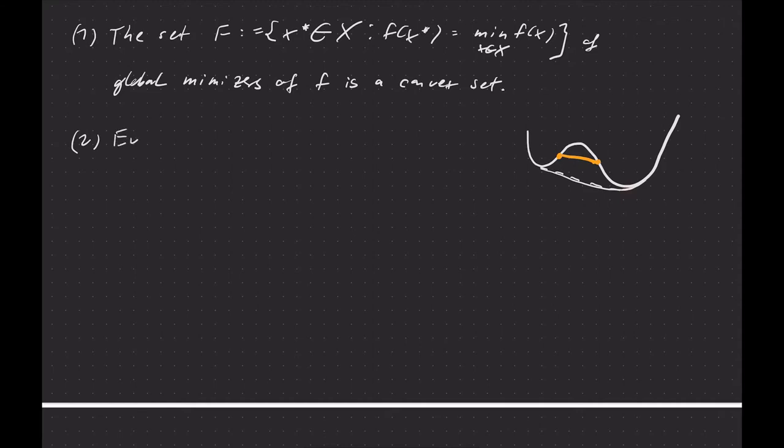And that's this important property. Every local minimizer of f is also a global minimizer of f.